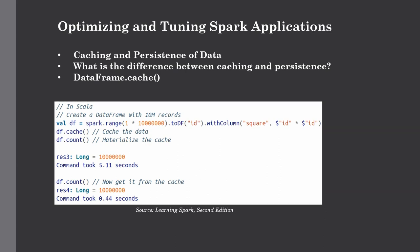Looking at this code snippet written in Scala — Scala and Spark don't differ much here — we create a simple data frame and use the cache function, which stores data in memory rather than on disk. We materialize the cache using the count function. The first count call takes around 5.11 seconds, but getting the count from cache takes only 0.44 seconds. This makes your application around 12 times faster, though results will vary by data frame.